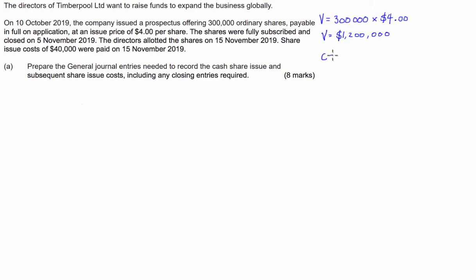We'll also make a mental note that our costs of this is going to be $40,000. And if this was my exam, I'd go in the question and underline all of the key dates. So we have the 15th of November, also the 15th of November, and the 5th of November. The 10th of October 2019 is when the company issues the prospectus, so nothing really happens there — they just put a glossy flyer out into the public domain, and we don't really need to account for that.